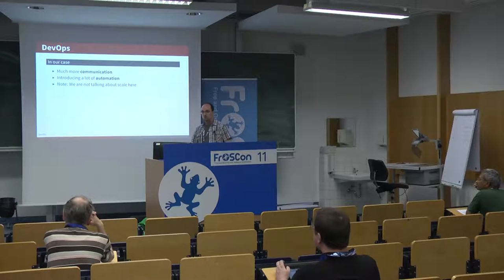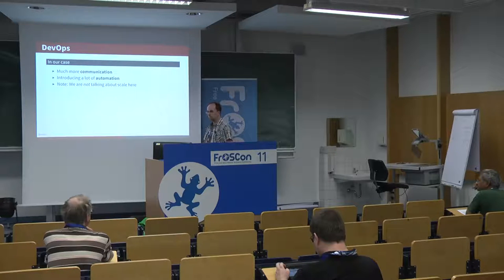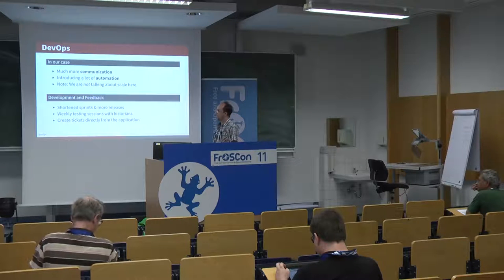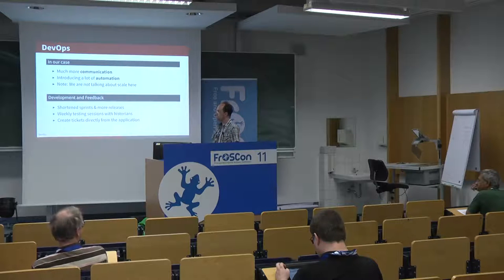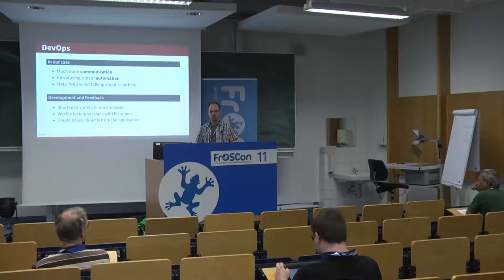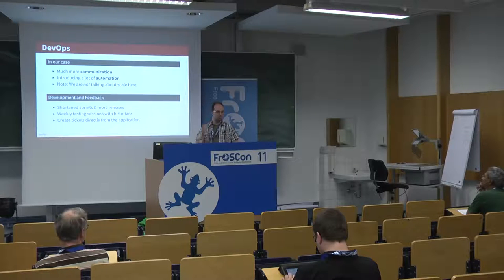What we needed was a lot more communication and a lot of automation. We're not talking about scale — we didn't need hundreds of servers. What we were interested in was defined state and reproducibility. What we tried to do to get more communication was shorten sprints and have more releases — going from maybe one release every six months to more or less weekly. We had weekly sessions with developers and the historians who were using the current version, talking about current issues and what the next steps were to fix something and get closer to what the application was supposed to do.